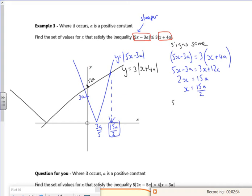Signs different, I've got to be careful. Because it would be like 3 times by minus x plus 4a. For ease, I'm going to make the 5x minus 3a my negative, and then leave the x plus 4a as my positive.